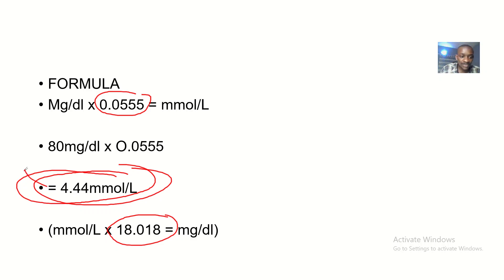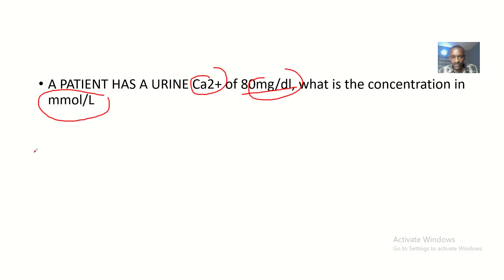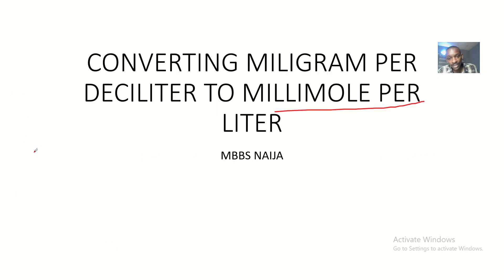So if you approximate it, it will give you 80 milligrams per deciliter. That's how to inter-convert between these two useful SI units.